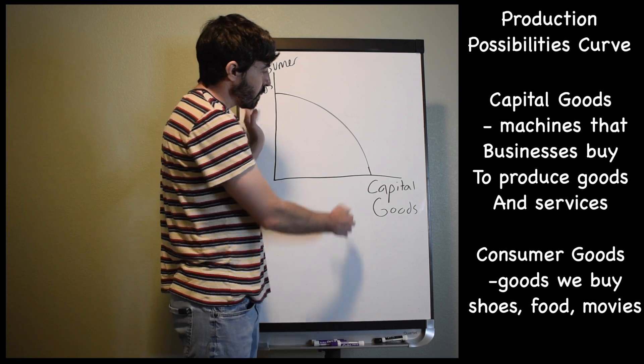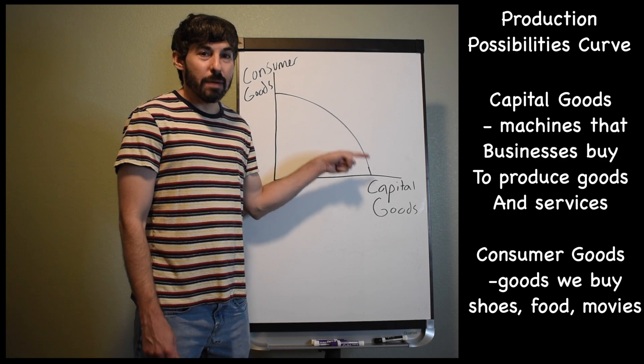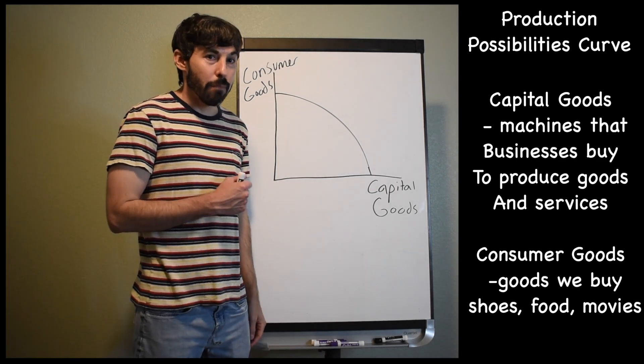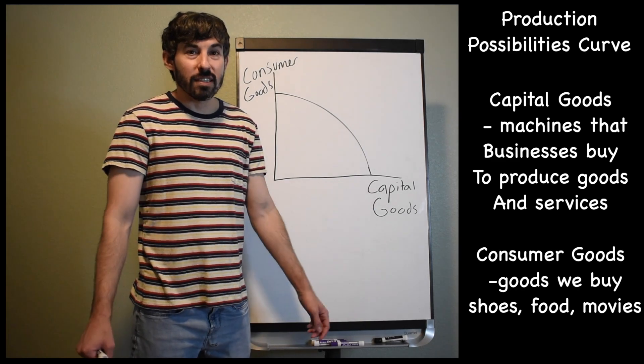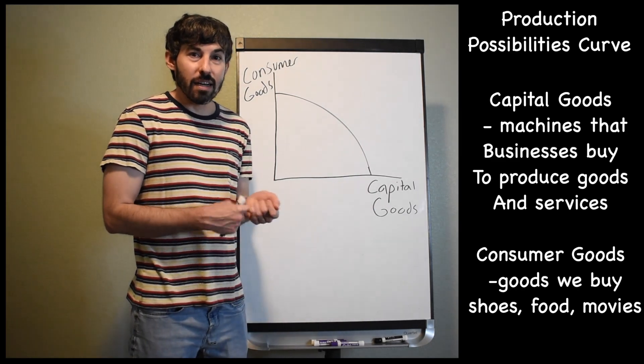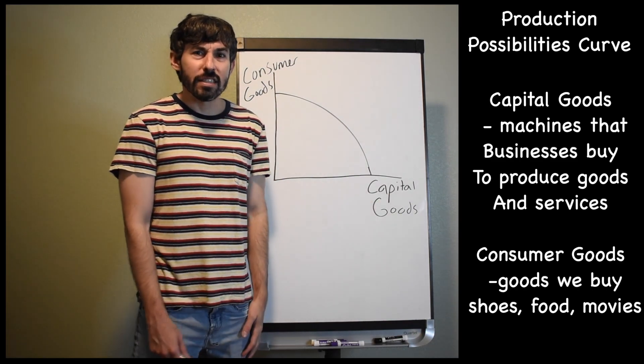All right, so this country is deciding between producing these two goods. This curve right here represents the country's productive capacity, how much stuff at most that this country could produce in a given year based on how many resources they have, how much labor they have, how much metal, steel, space for farming, all that kind of stuff.